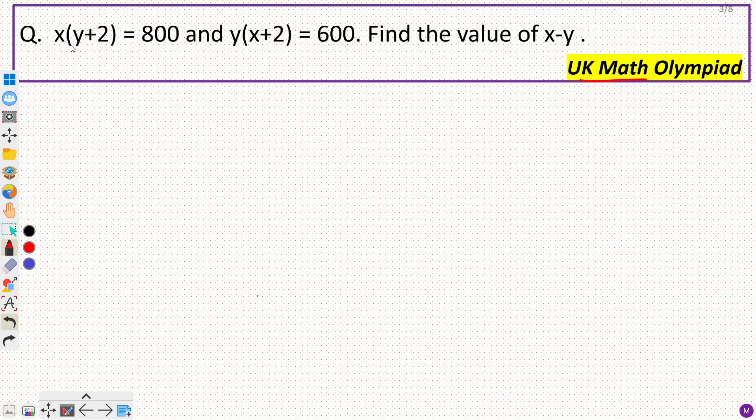The question says if x into y plus 2 equal to 800 and y into x plus 2 equal to 600, then what is the value of x minus y?